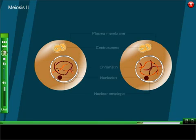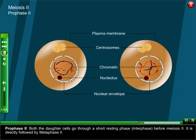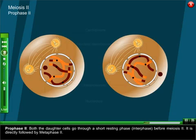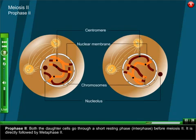Meiosis two, Prophase two: Both the daughter cells go through a short resting phase or interphase before meiosis two. It is directly followed by metaphase two.